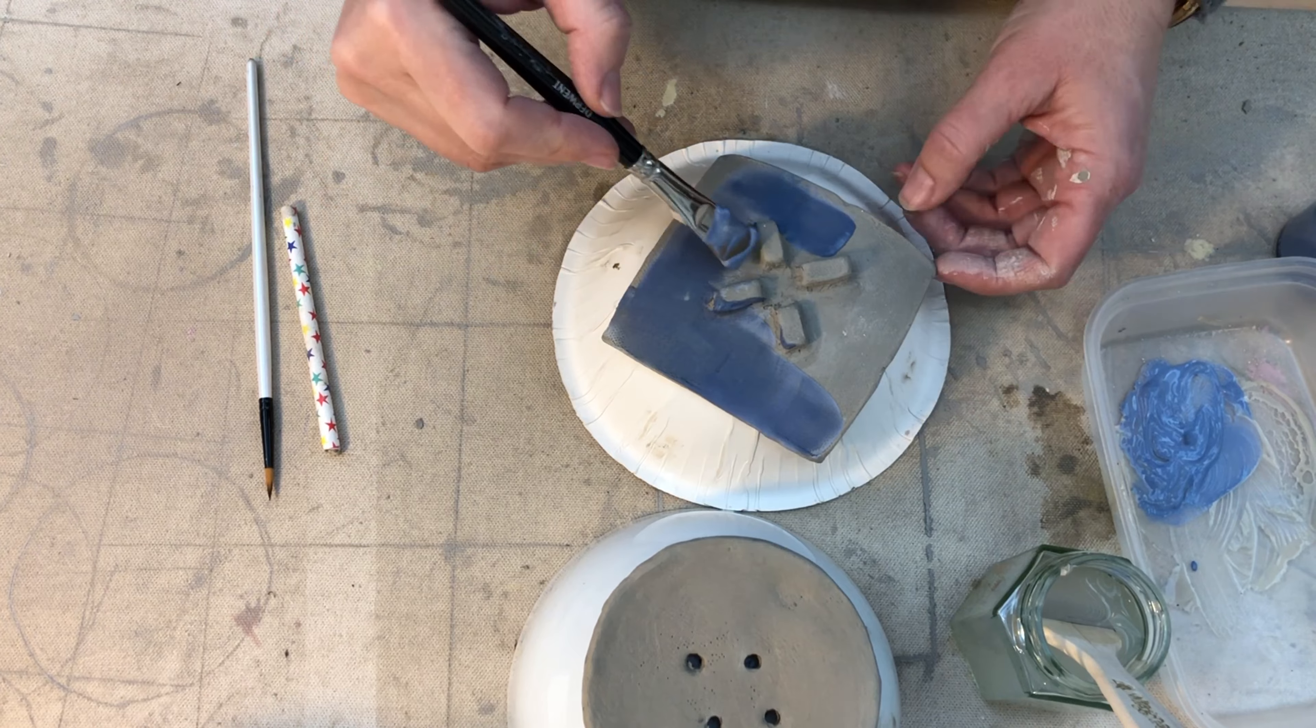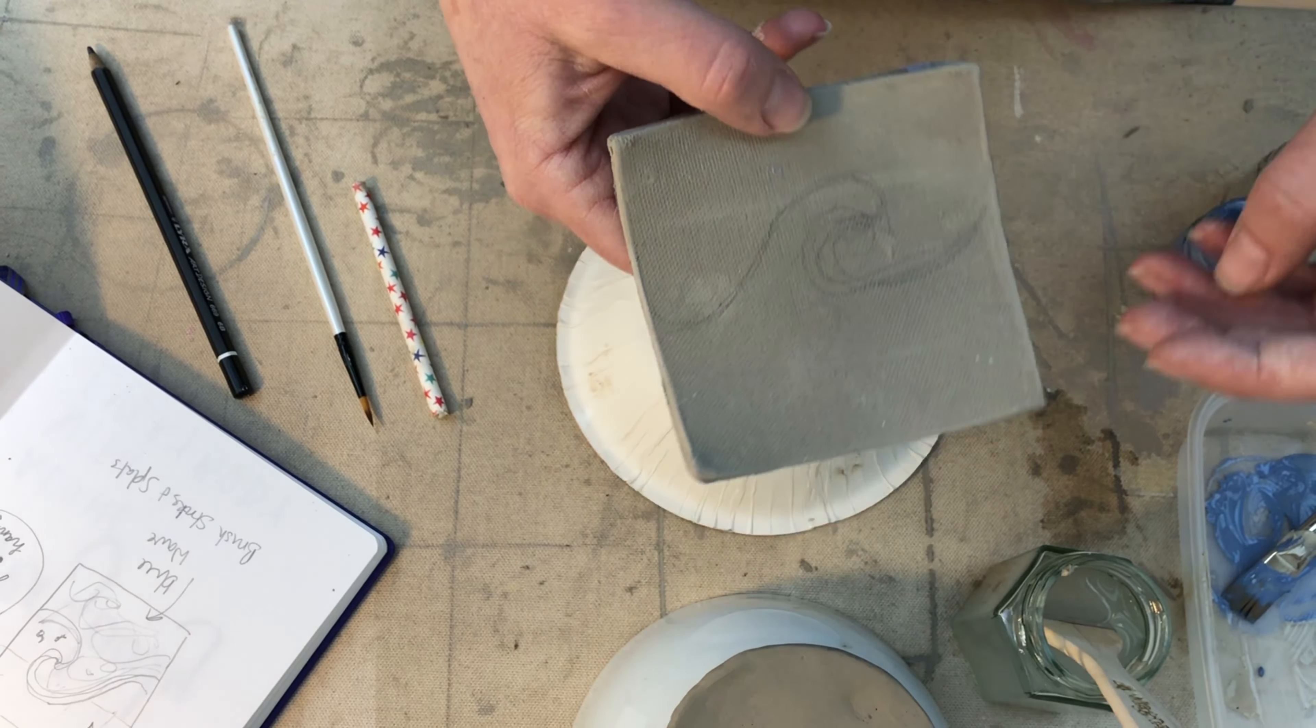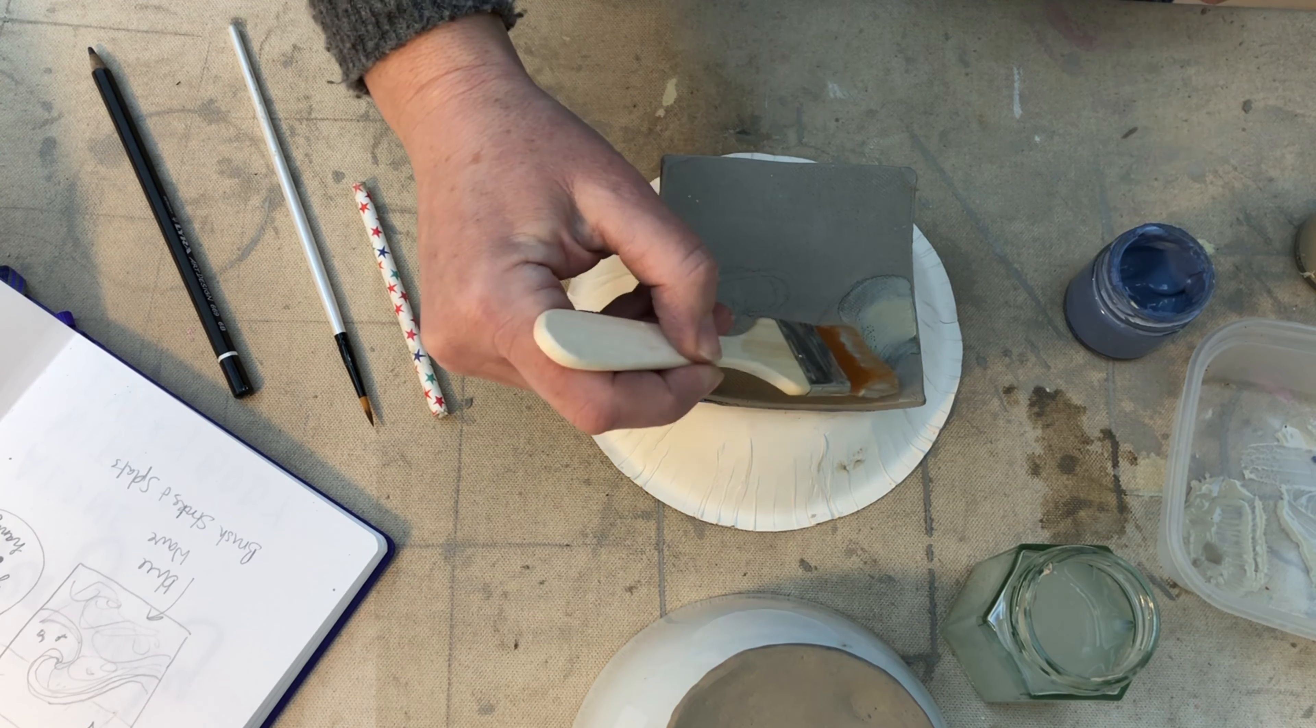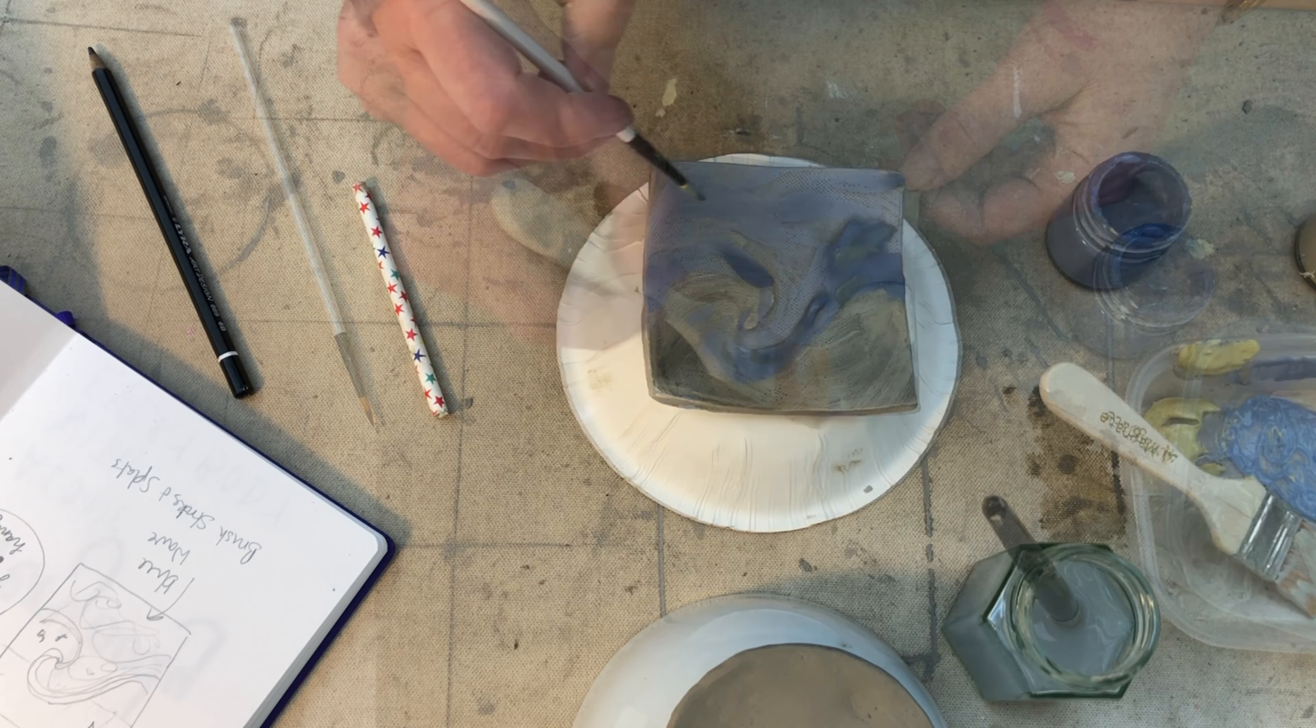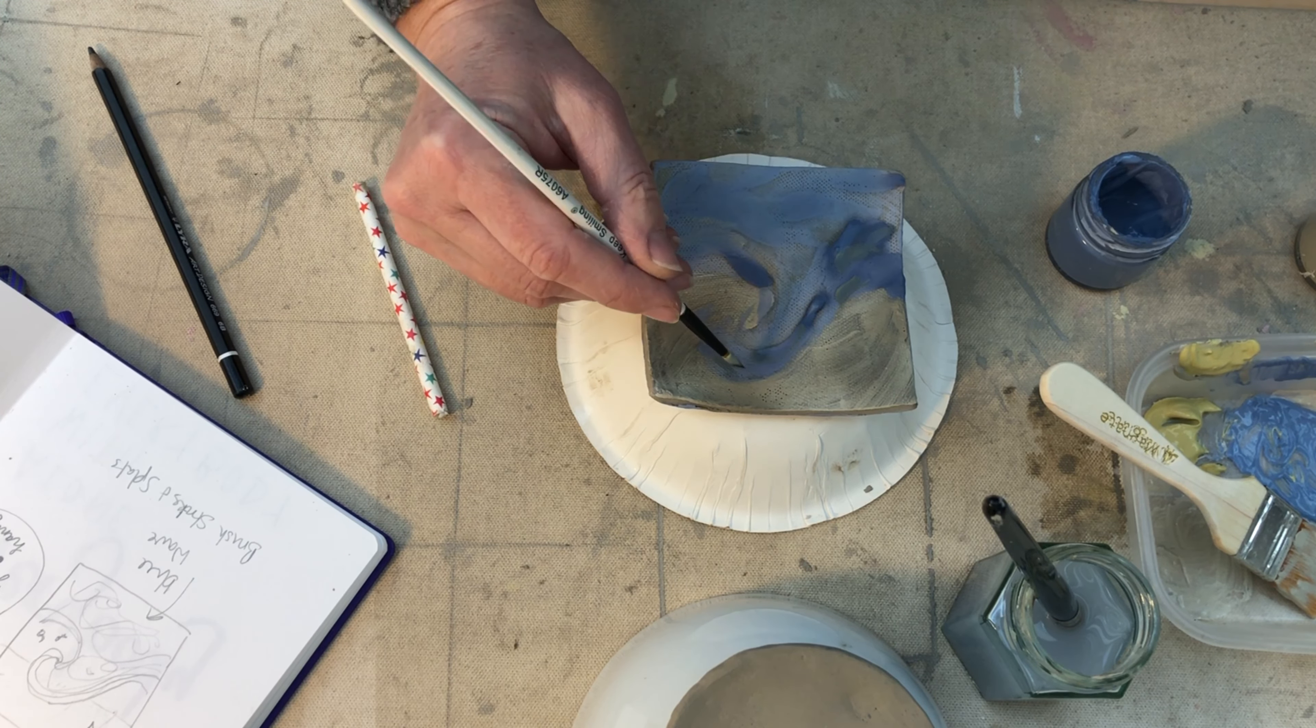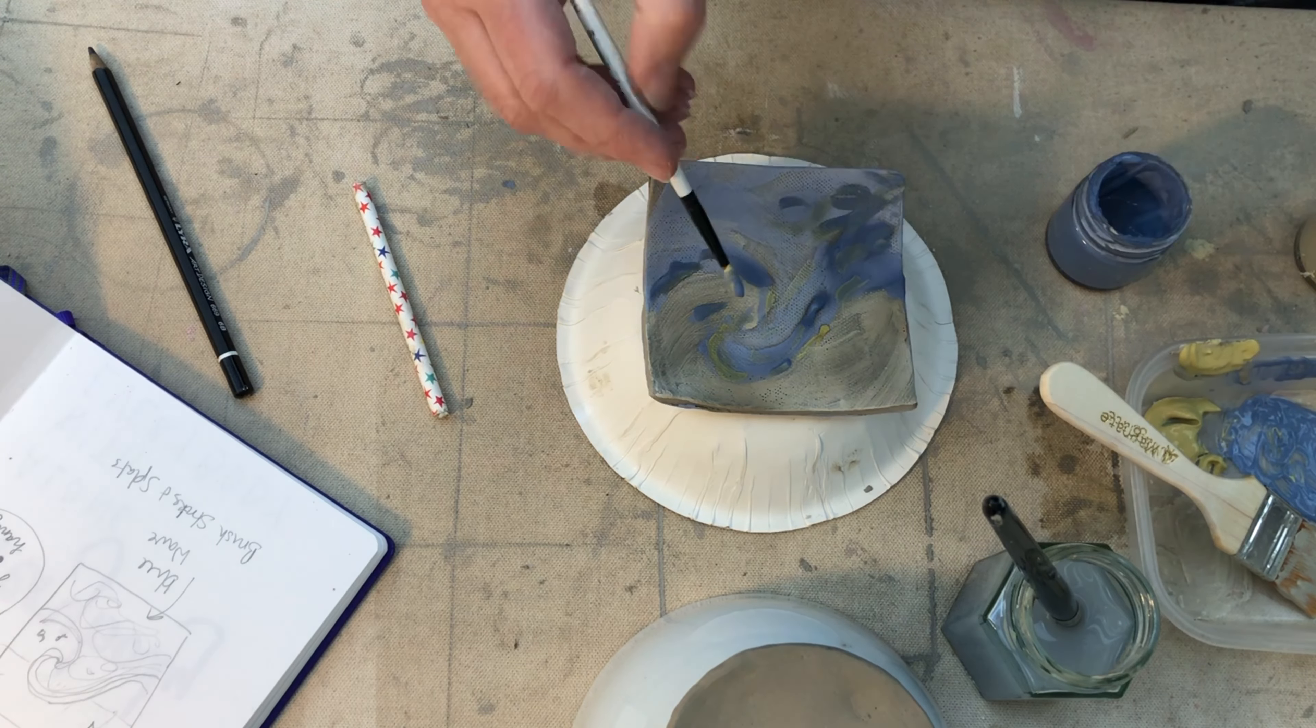For this square dish I'm going to paint the bottom blue and then I'm going to paint a wave on the top. I'm starting off with quite a thin wash to begin with and then I will build up with layers of color, letting it dry in between. I'm also going to splat some color on there as well. See how that looks.